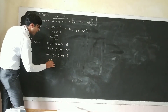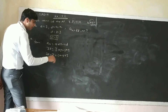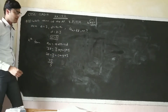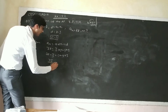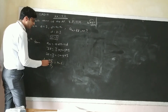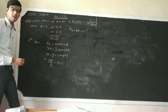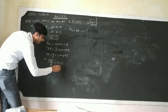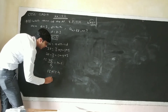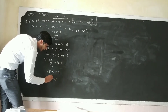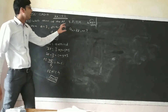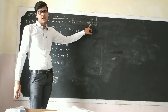So 78 minus 3 equals (N minus 1) times 5, which gives 75 equals (N minus 1) times 5. Dividing both sides by 5, we get N minus 1 equals 15, so N equals 16. The 16th term of this series is 78.